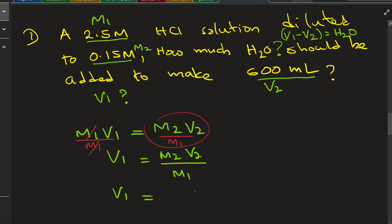V1 equals M2V2 over M1. So your M2 is 0.15 molar, plug in with units, times V2 is 600 milliliters.